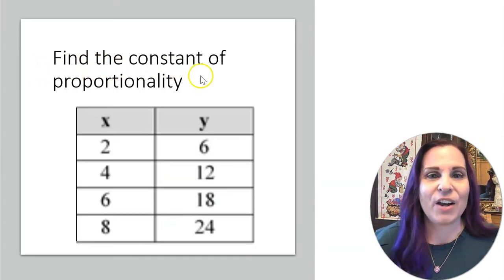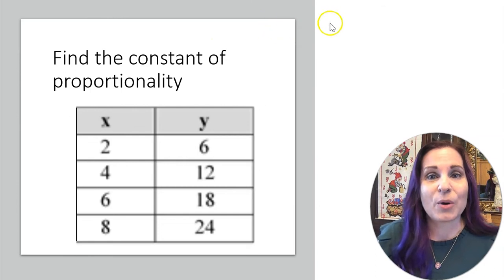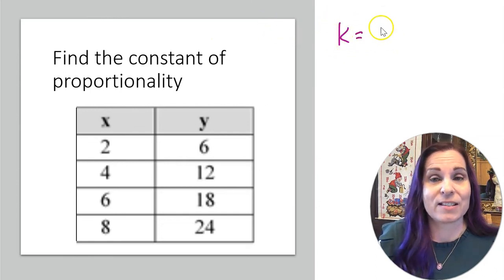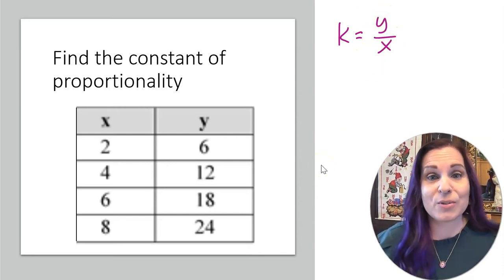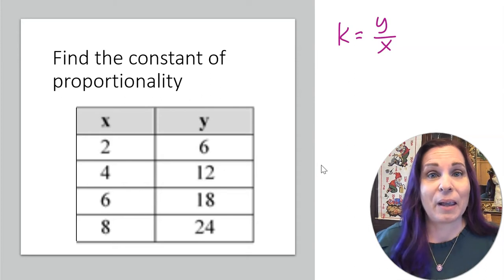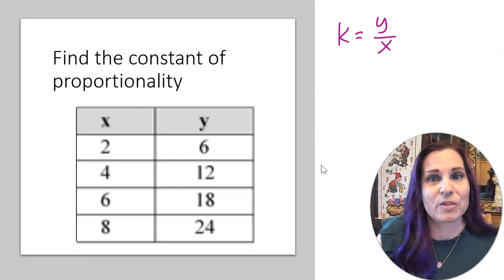Let's try a few. Find the constant of proportionality. All right, so we know that from the previous slide, to find that constant, I have to do y divided by x. Now, the good news is you can pick any y or x pair that you like. So I'm going to go with the smallest one.